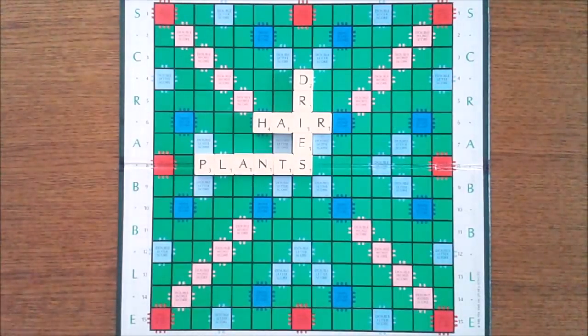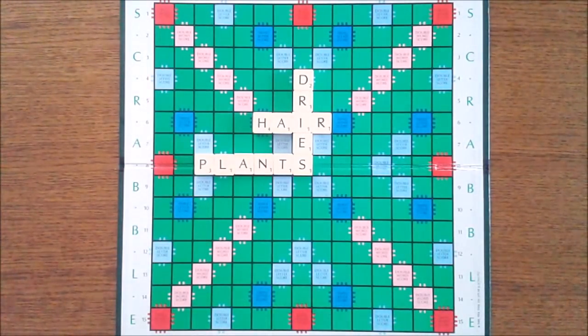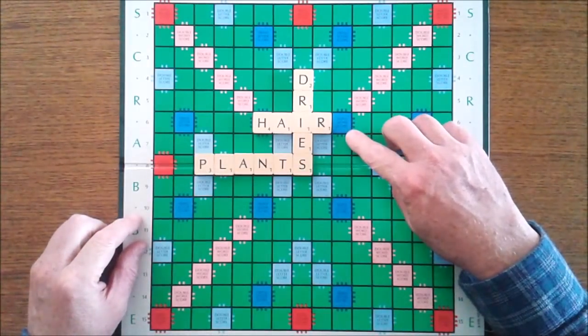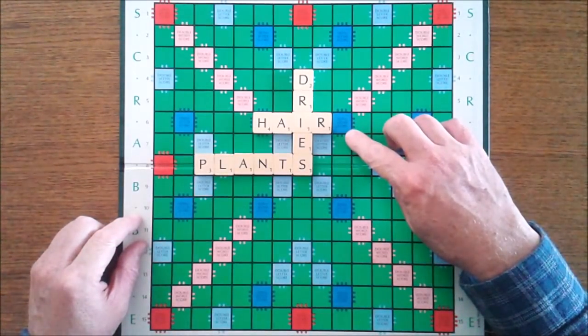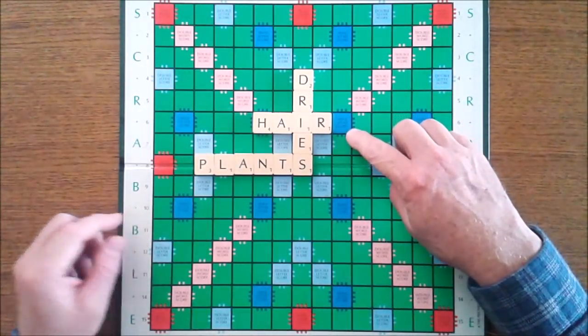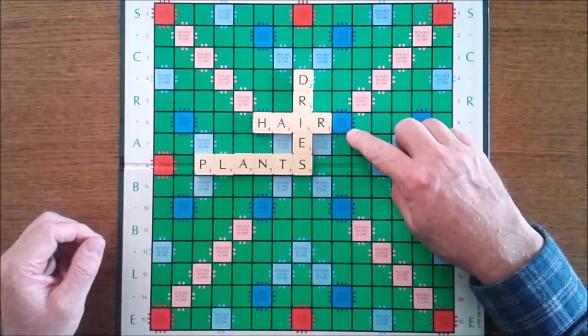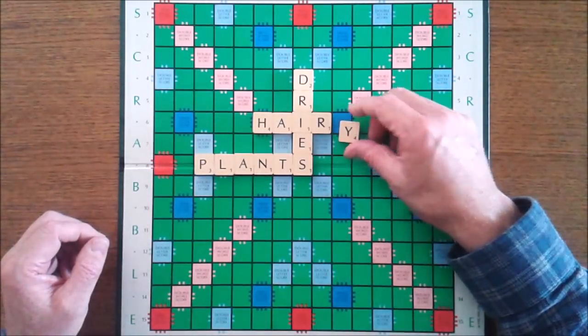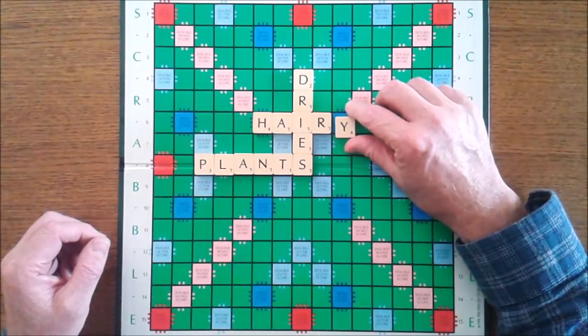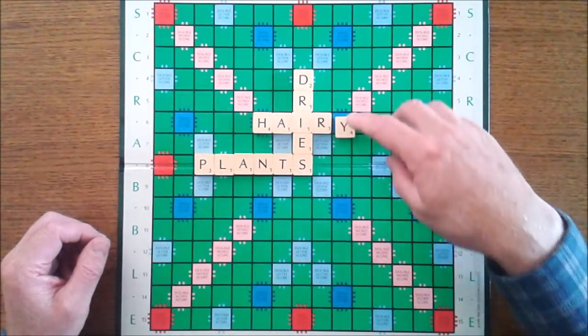Now look for opportunities in this setup. Our eyes should be drawn straight to this square here. Triple letter both ways. If you put a word down here or up there, letters that would fit like S or better still Y would score 24 points just on that one letter alone being placed there if you did a word down or up.